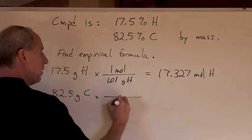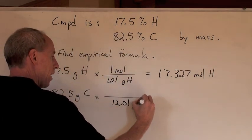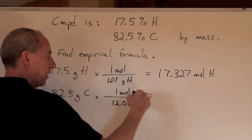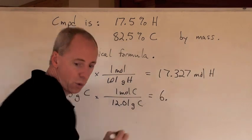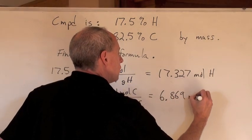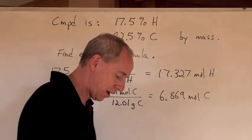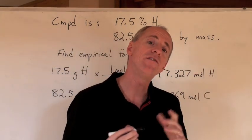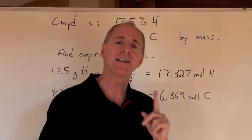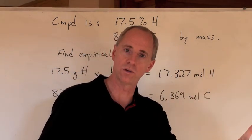82.5 grams of carbon, 12.01 grams of carbon, the molar mass of carbon, when we have one mole of carbon. And so when you do that math, you get 6.869 moles of carbon. Now that's a ratio, if you had 100 grams of the chemical, of the moles of carbon to hydrogen. That's step one, turn the grams to moles.